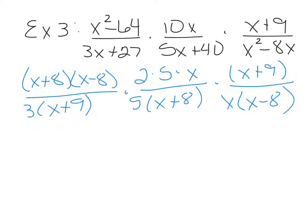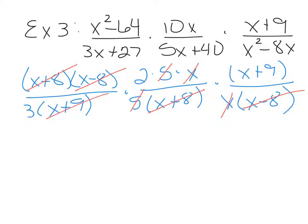Now start canceling — vertically or diagonally. Remember, any numerator factor can cancel with any denominator factor, even if they're far apart. The x minus 8 cancels with the other x minus 8. The 5s cancel. The x's cancel. The x plus 8 cancels with the other x plus 8. The x plus 9 cancels with the other x plus 9. What's left across the numerator is just 2, and across the denominator, only a 3. So the final answer is 2 over 3.